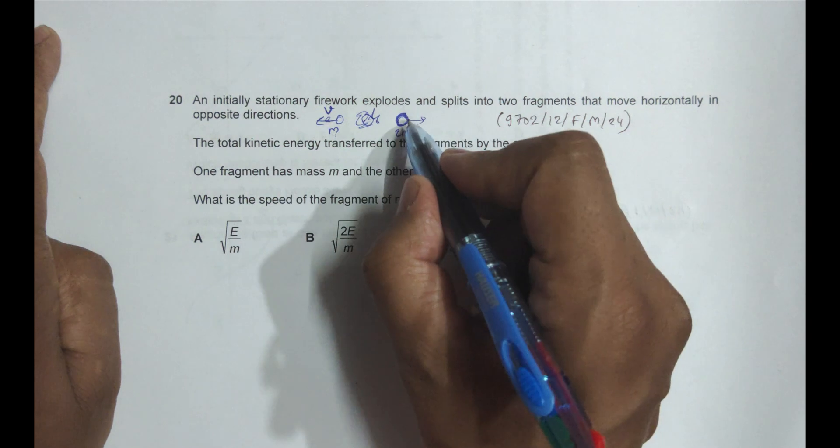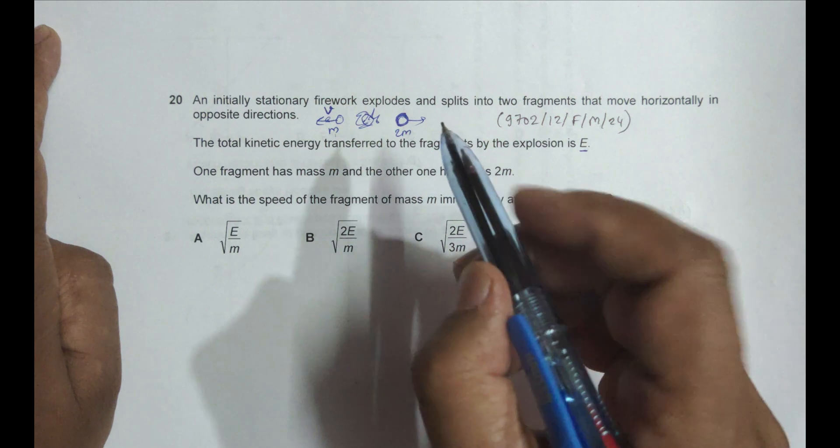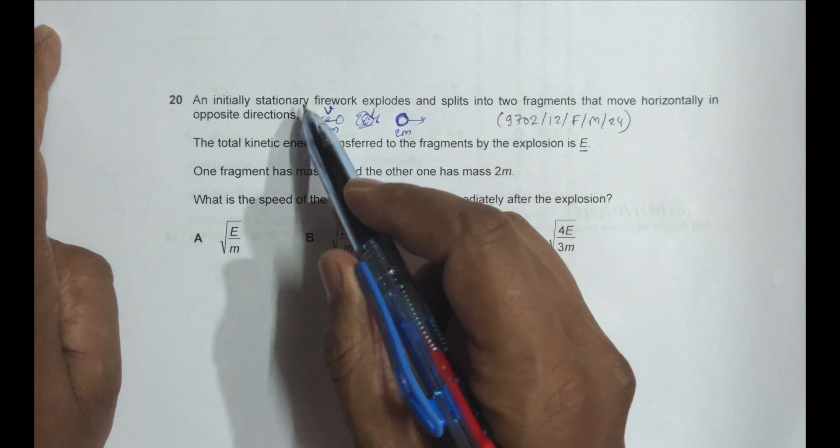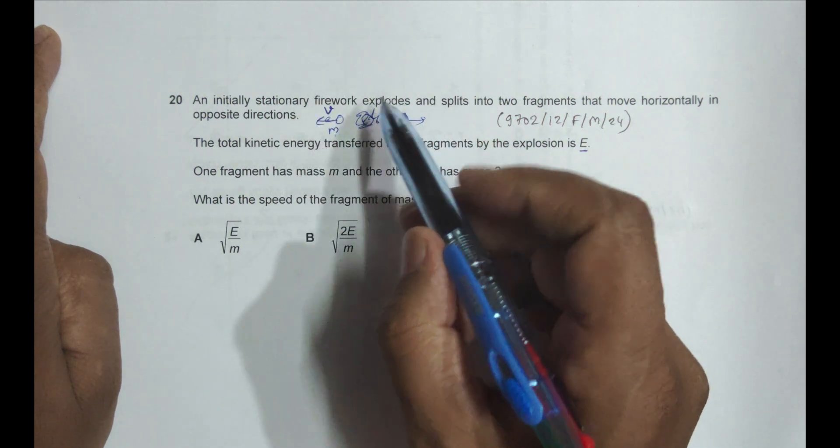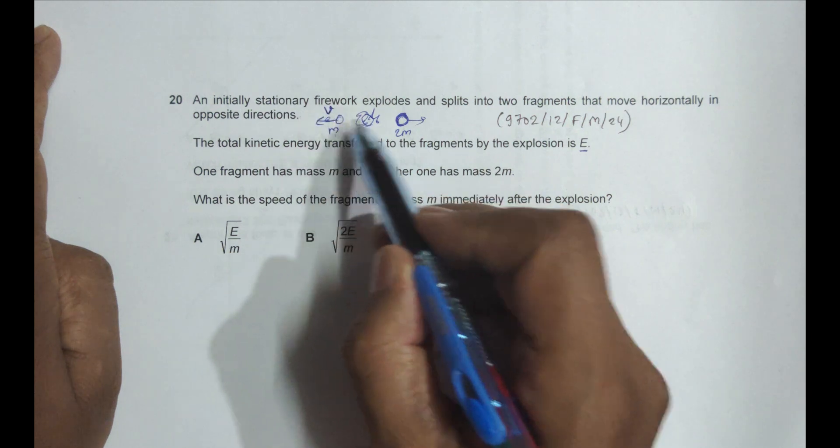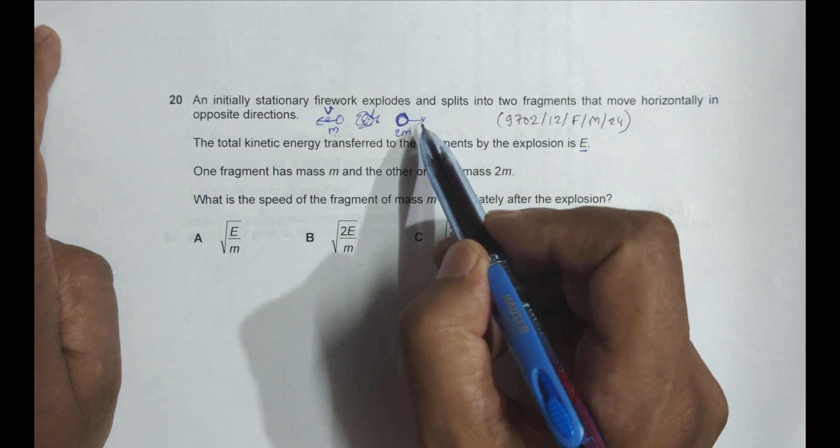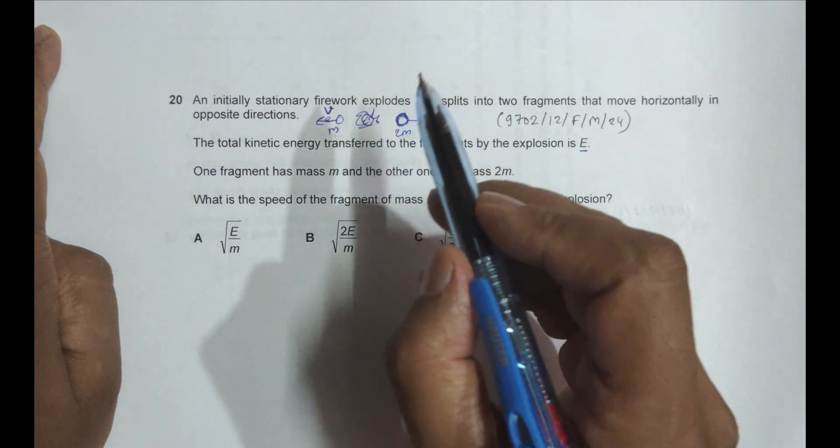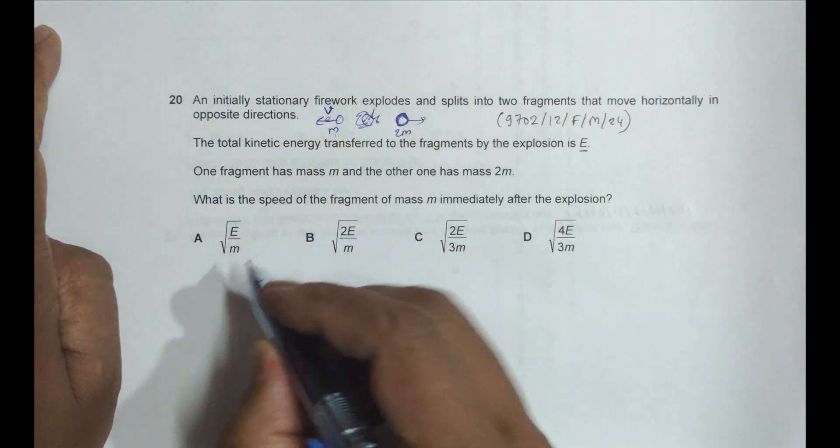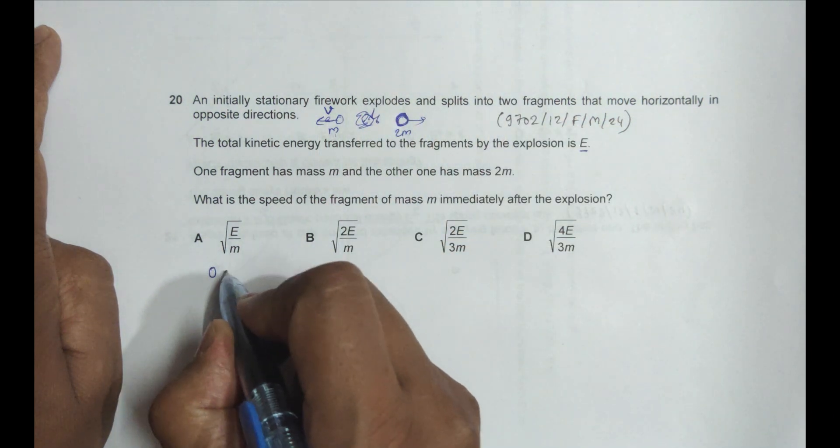Let's say its speed is V. The first thing is the total momentum is conserved, so the momentum of this body and the momentum of this body should be equal. It follows from the fact that initial momentum equals final momentum. Initial momentum is 0, so the final momentum should be equal to...